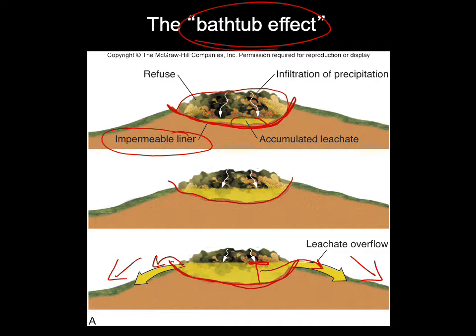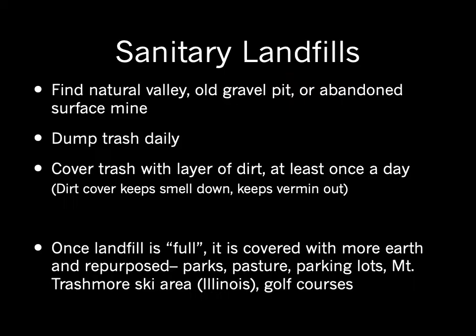Even with an impermeable liner, you can create what's called the bathtub effect: accumulated leachate eventually overtops the liner and flows downhill, contaminating groundwater. So even with proper liner installation, you have to be careful that accumulated leachate doesn't top over the liner.